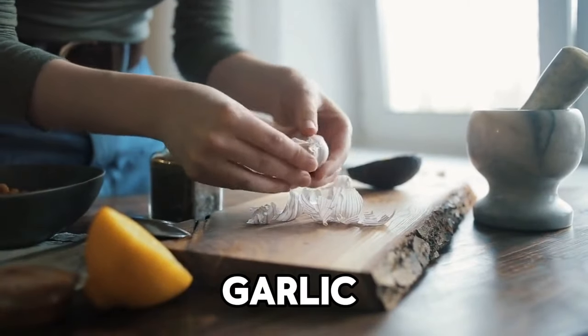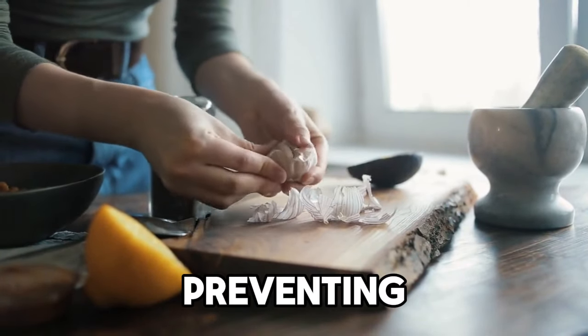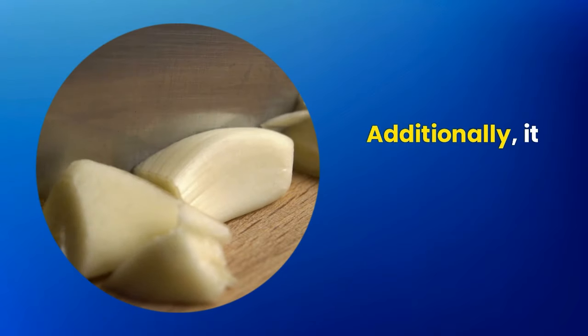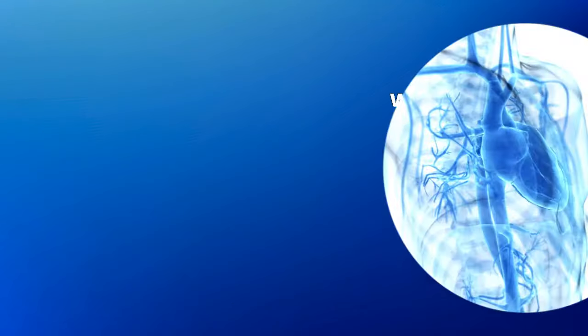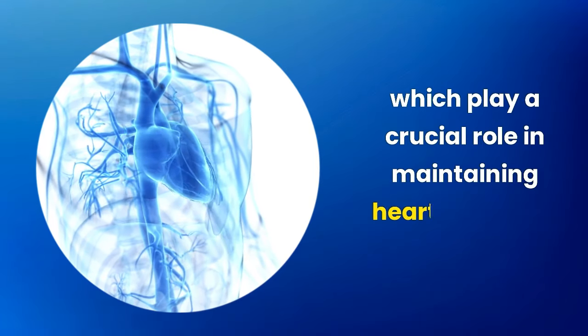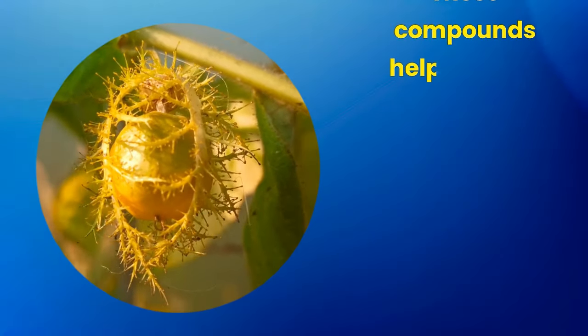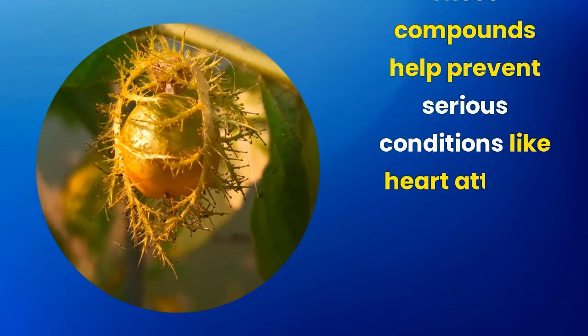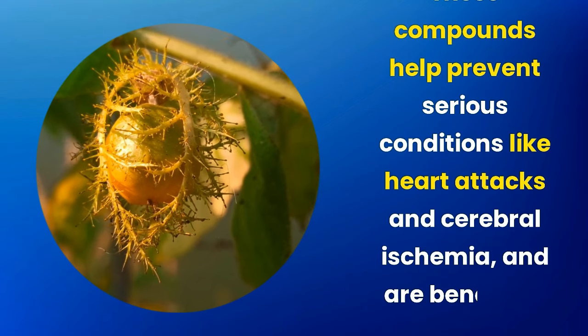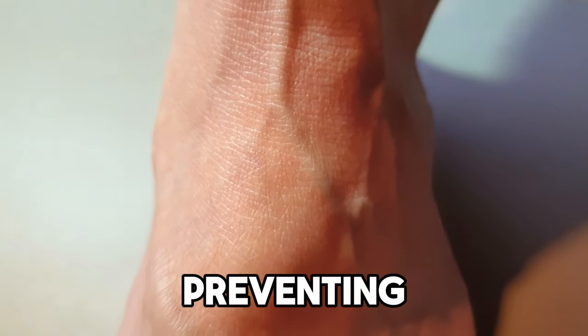These characteristics make garlic a powerful ally in preventing various diseases. Additionally, it is a rich source of flavonoids, which play a crucial role in maintaining heart and brain health. These compounds help prevent serious conditions like heart attacks and cerebral ischemia and are beneficial for blood circulation, especially in the legs, preventing thrombosis.